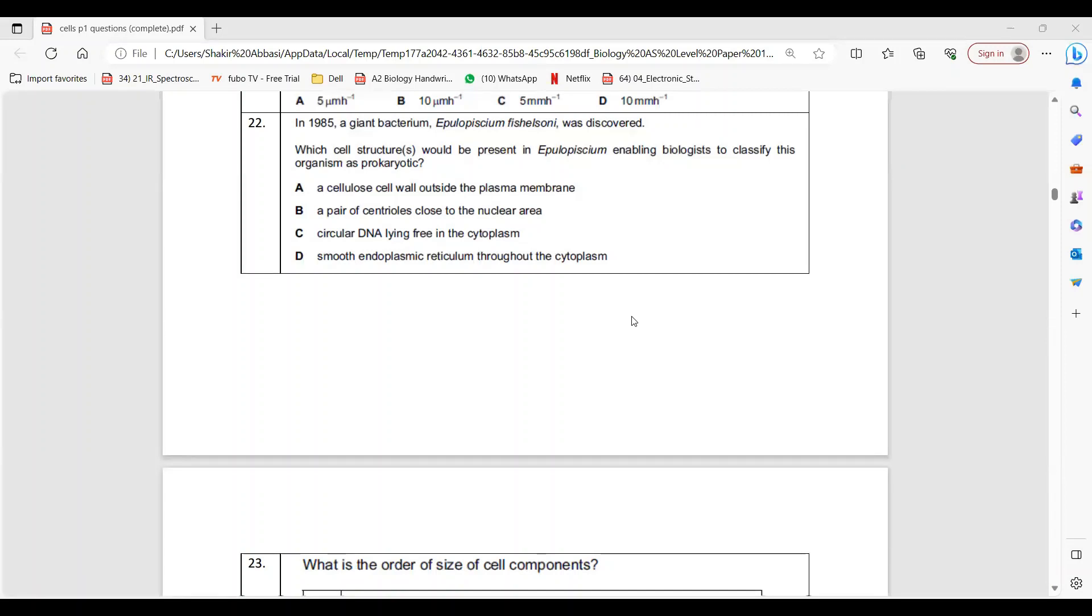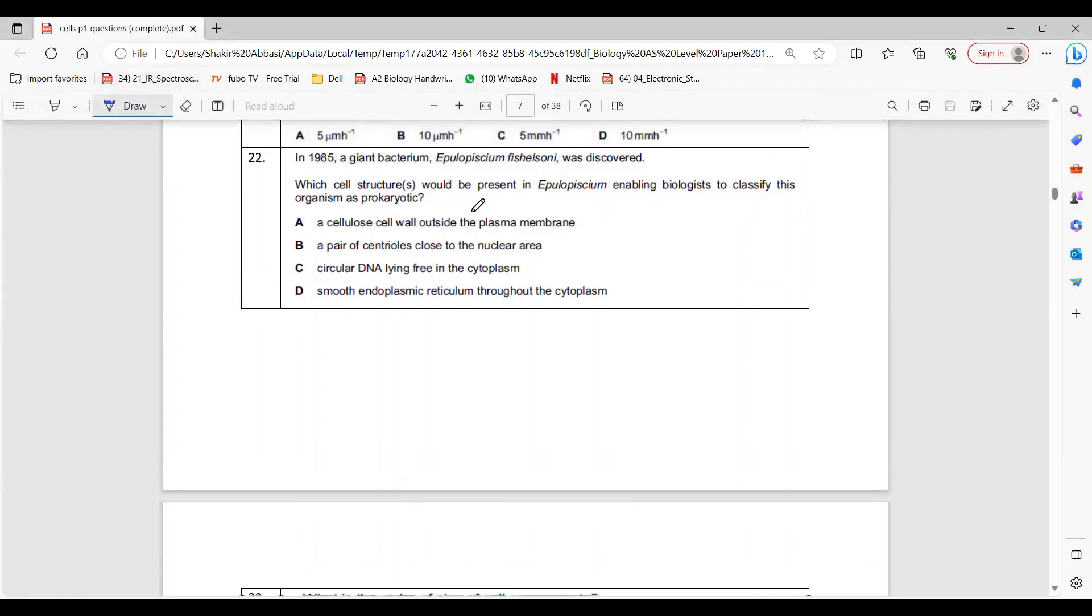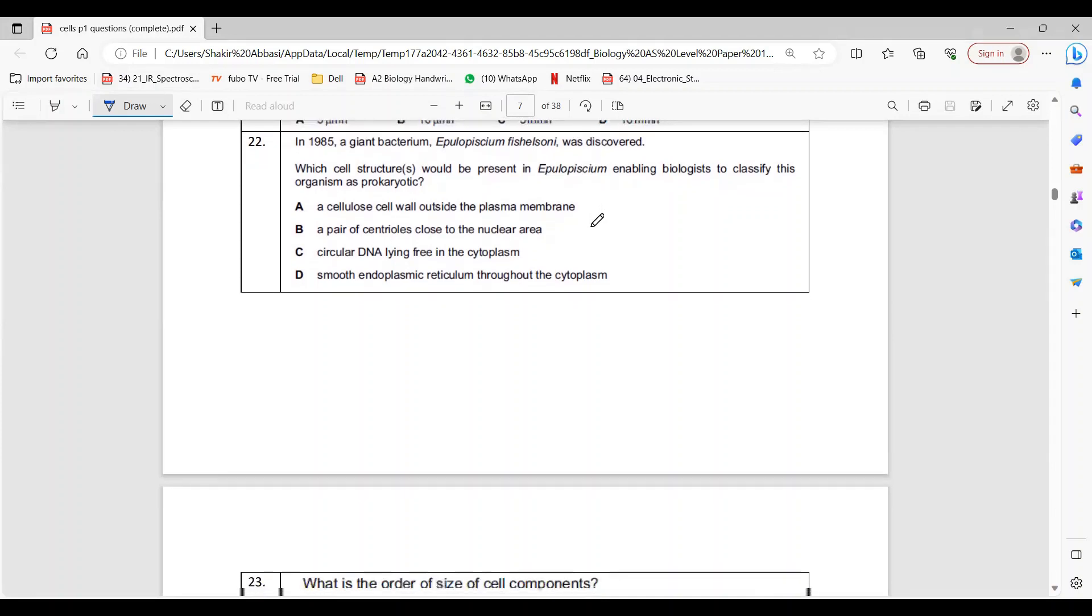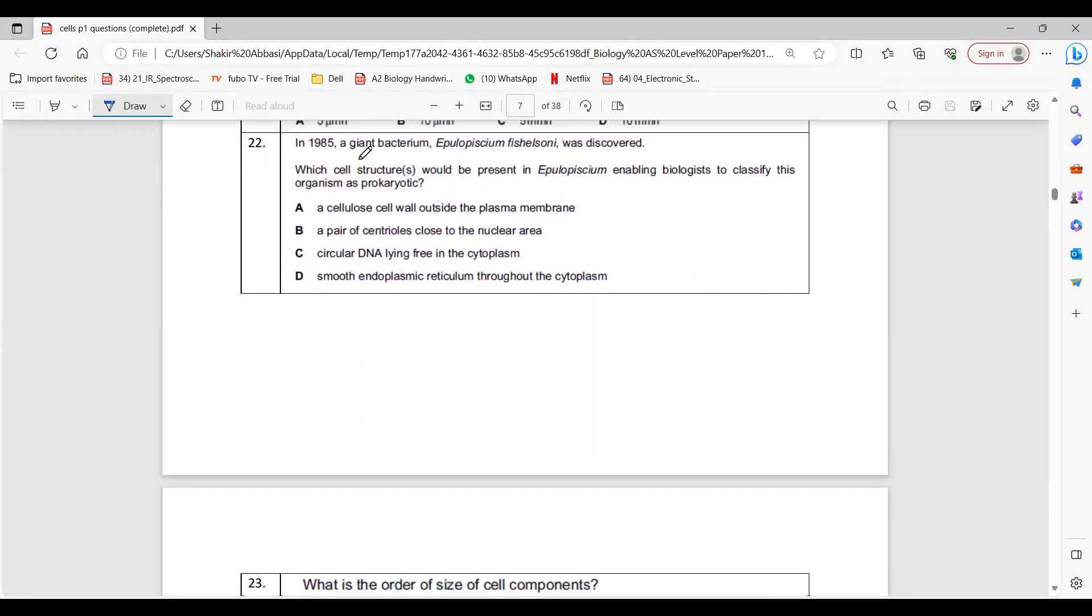Assalamu alaikum dear AS Biology students. We could not have remedial class this Sunday, so let me offer you discussion on these questions. This is the second section of MCQs, chapter on cells. In 1985, a giant bacterium E. Fischelsonne was discovered.